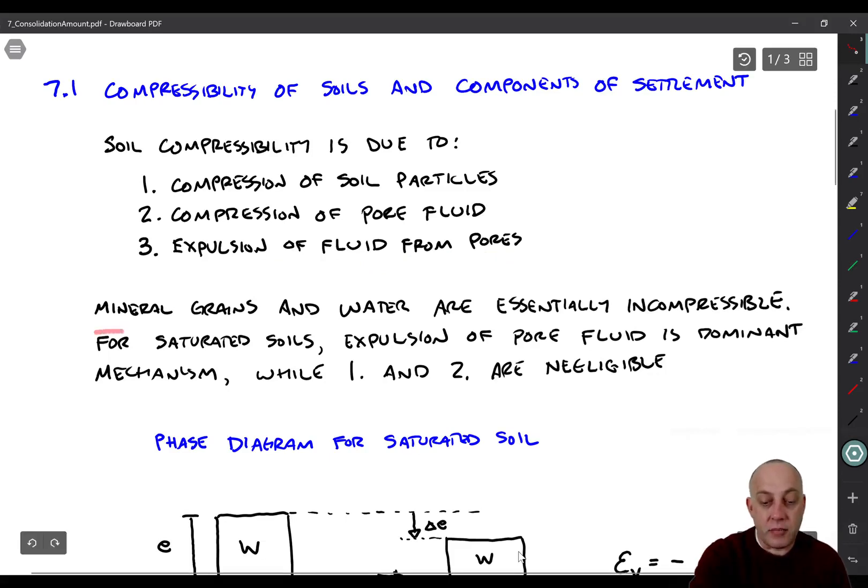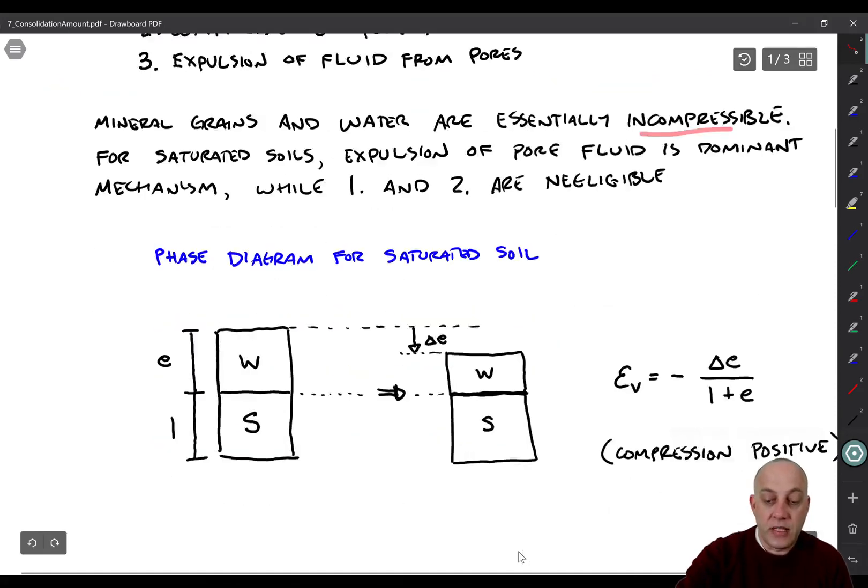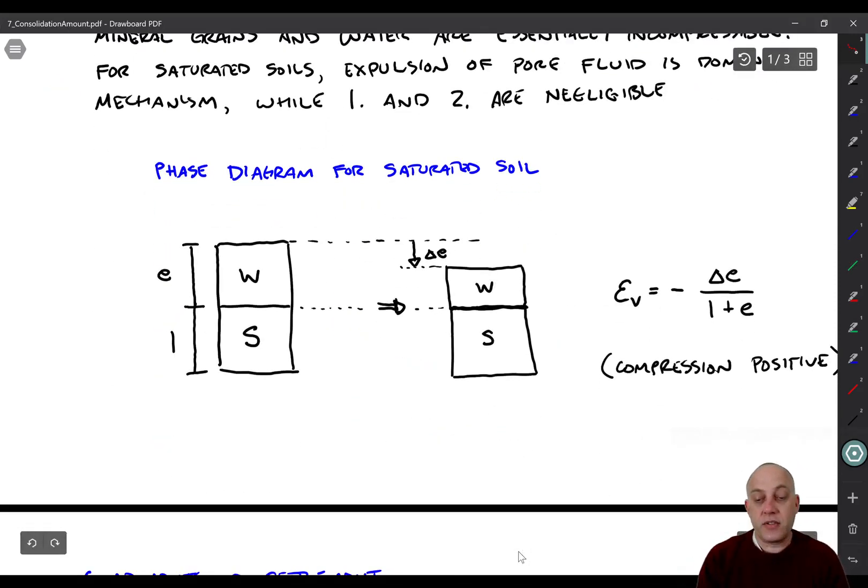Alright, so like I said, mineral grains and water are essentially incompressible. We don't worry about one and two. And let's look at a phase diagram now to look at what's going on. Here we have an initial condition. There's the water and the solids. It's saturated, so we don't have an air phase in this case. It's just a two-phase material. We also don't have any masses or volumes, so I'm going to just assign one to the volume of solids, and then the volume of the water is e, right? Void ratio.